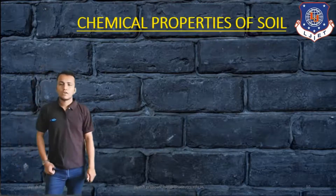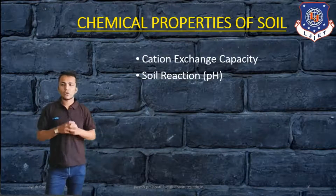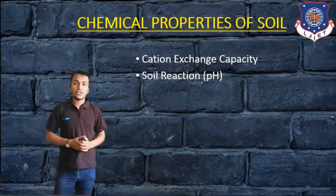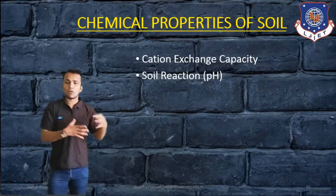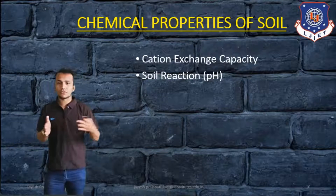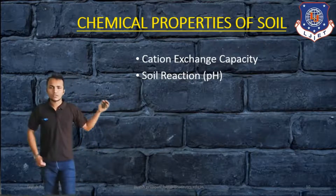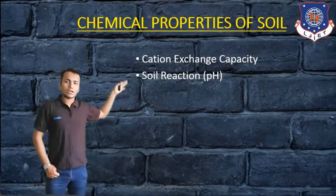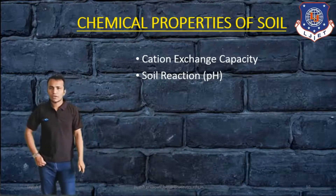The chemical properties of soil include two types: cation exchange capacity and soil reaction. The most important part is the pH of soil. In chemical properties, if we have to measure parameters like resistivity, temperature, and pH, those are what we will discuss in this session. So let us start with soil pH.